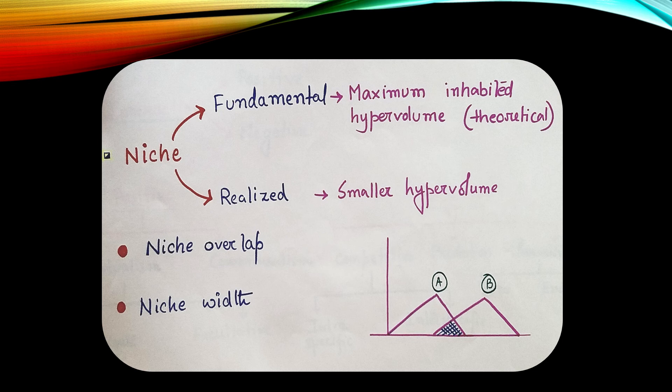Often while studying the concept of niche, we come across two words: niche overlap and niche width. Niche width is the extent of area, extent occupied by the organism. This is known as niche width.